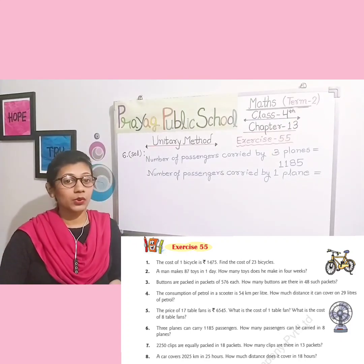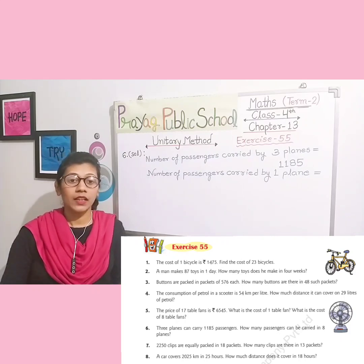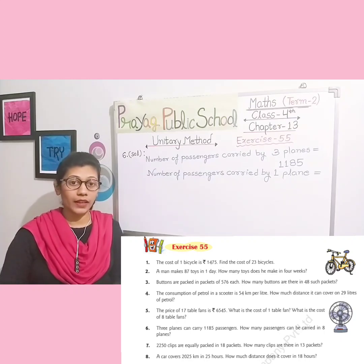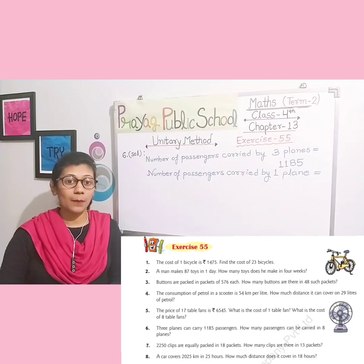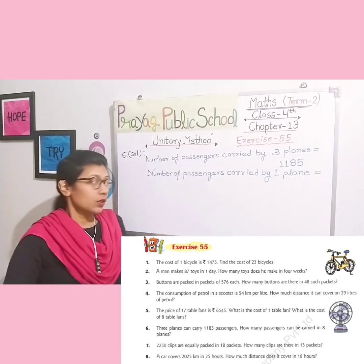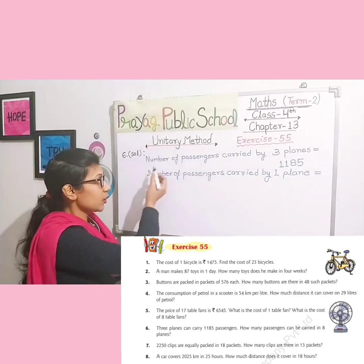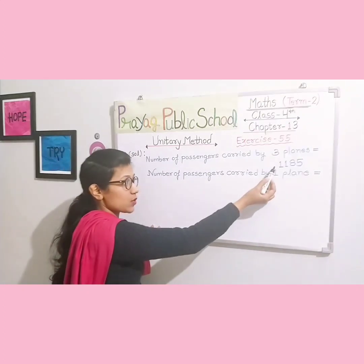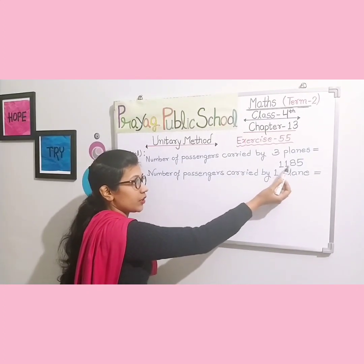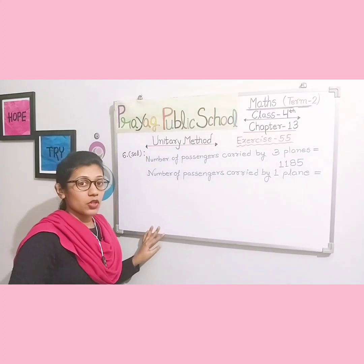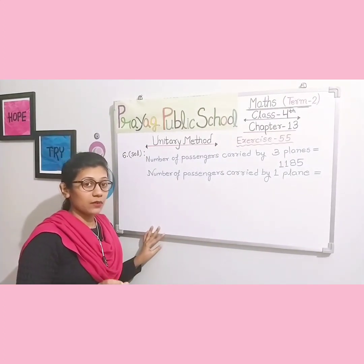First, find out how many passengers travel in one plane. Get that result, then multiply it by 8 to get the final answer. So: number of passengers carried by 3 planes is 1185. We need to find fewer value — one plane — so we do division. Number of passengers carried by one plane = 1185 divided by 3.